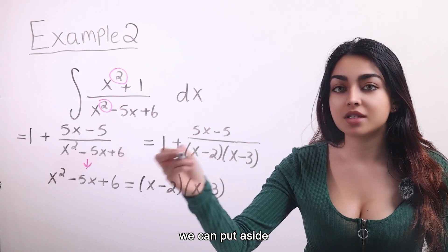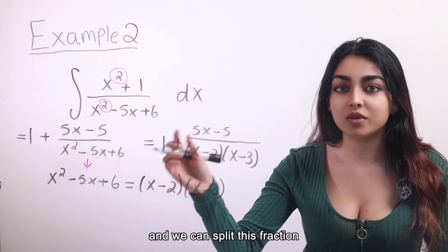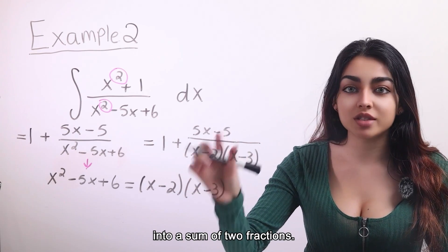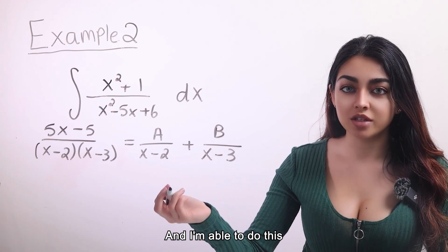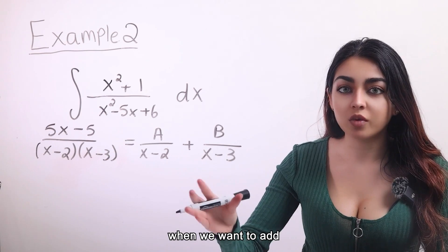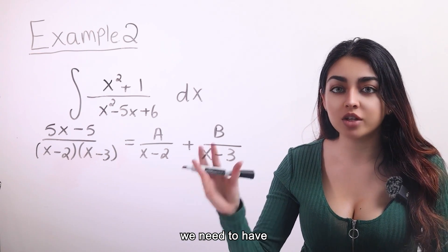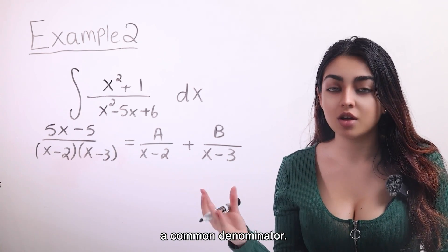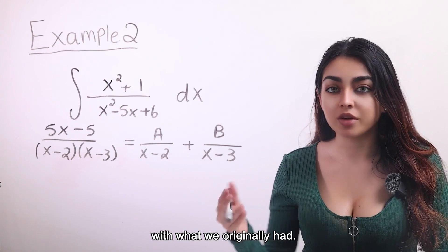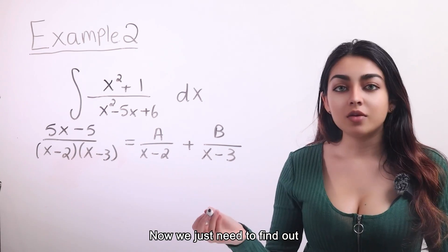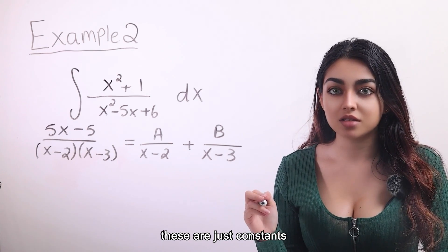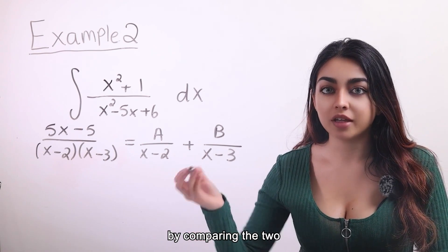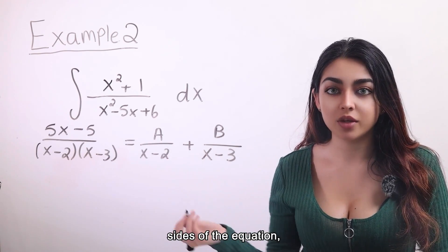Furthermore, we can put aside this one for now and we can split this fraction into a sum of two fractions. And I'm able to do this because recall that when we want to add two fractions, we need to have a common denominator. So we will eventually end up with what we originally had. Now we just need to find out what a and b are. And remember, these are just constants.